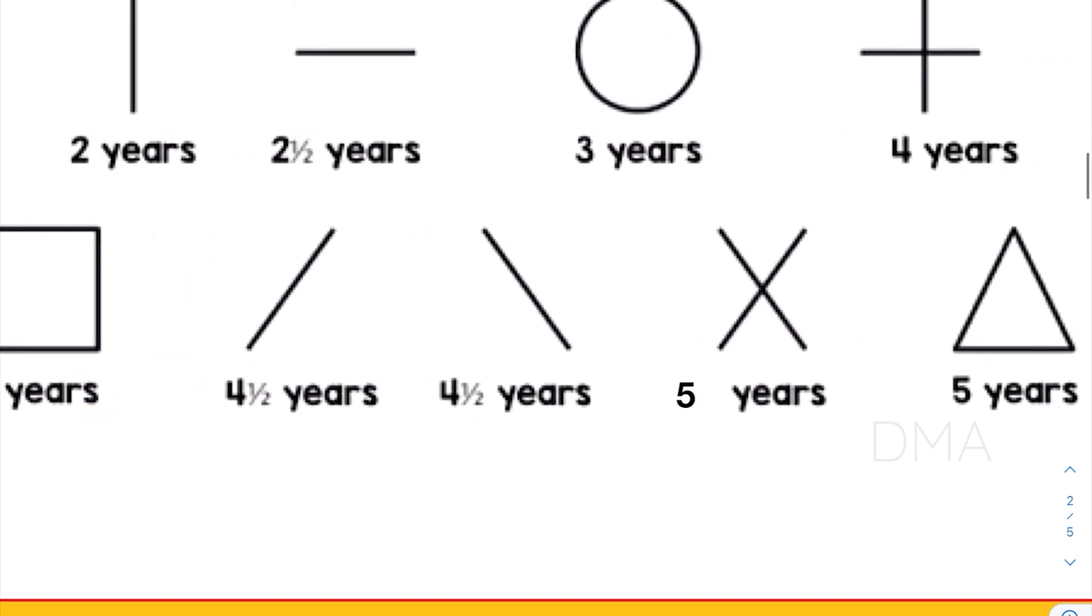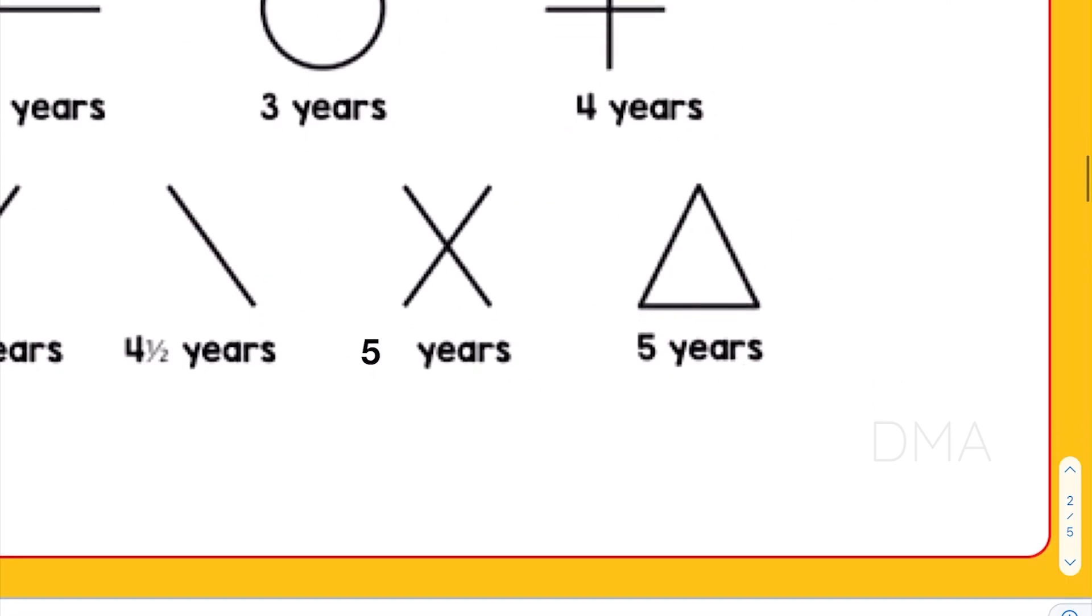At the age of four and a half years, the baby is able to draw a diagonal line. And at the age of five years, the baby is able to draw a multiplication sign or a tilted cross, and also it is able to copy a triangle.